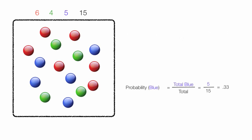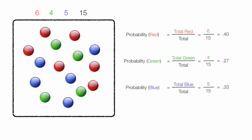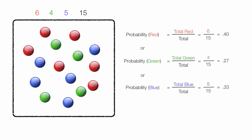If I pick a marble, I have to pick a red, or a green, or a blue — one of them has to happen. And this all adds up to 1, or 100% of the time.